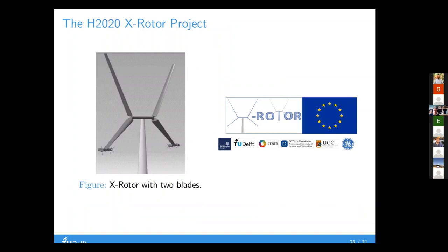Last, and I think I'm just hitting my time — this is a new project we are part of, as second partner, led by the University of Strathclyde. It's called the X-Rotor, an Horizon Europe project financed by the European Commission. It's a very interesting concept: a vertical axis wind turbine in an X-shape — actually two U-shapes forming the axis wind turbine — where at the tip of the rotor you place horizontal axis wind turbines to convert power. This means there is no central generator, only a bearing at the center.